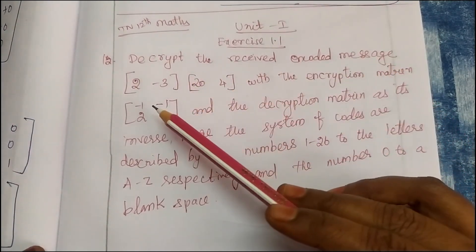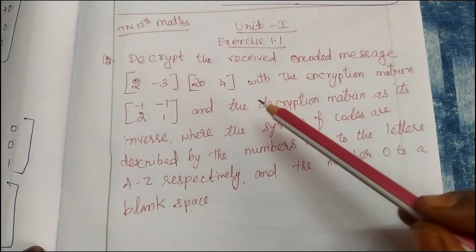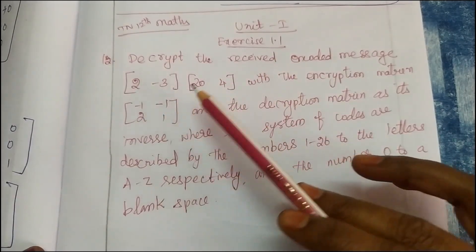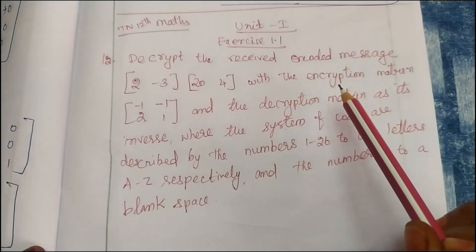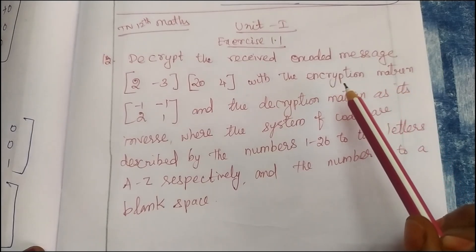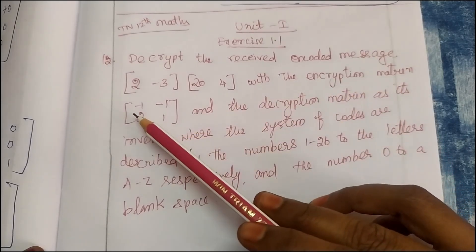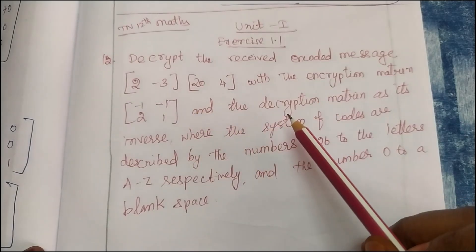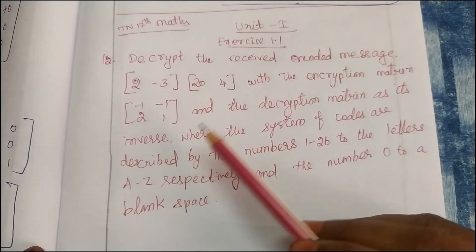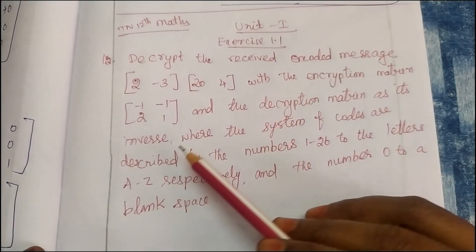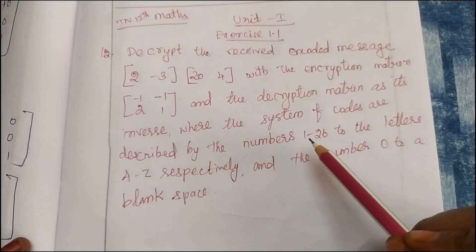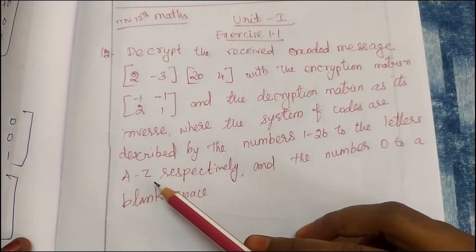Decrypt the received encoded message: 2, minus 3, 24. 2 row matrix for encoded message with the encryption matrix minus 1, minus 1, 2, 1, and the decryption matrix as its inverse. The decryption is inverse. The system of codes are described by the numbers 1 to 26 to the letters A to Z.